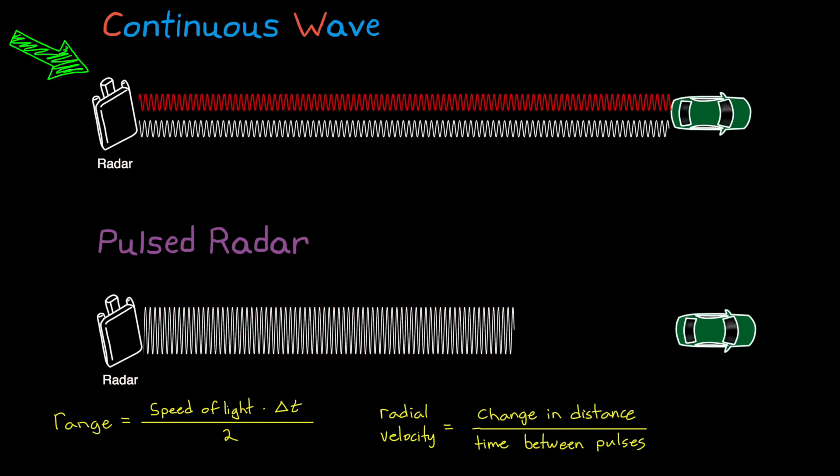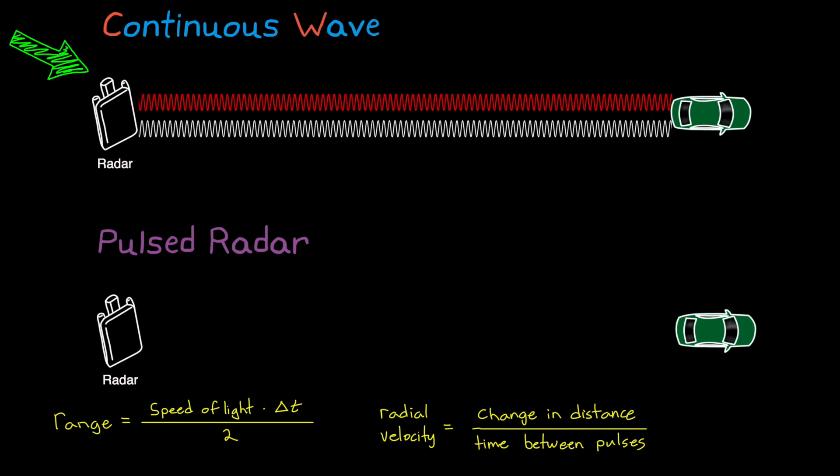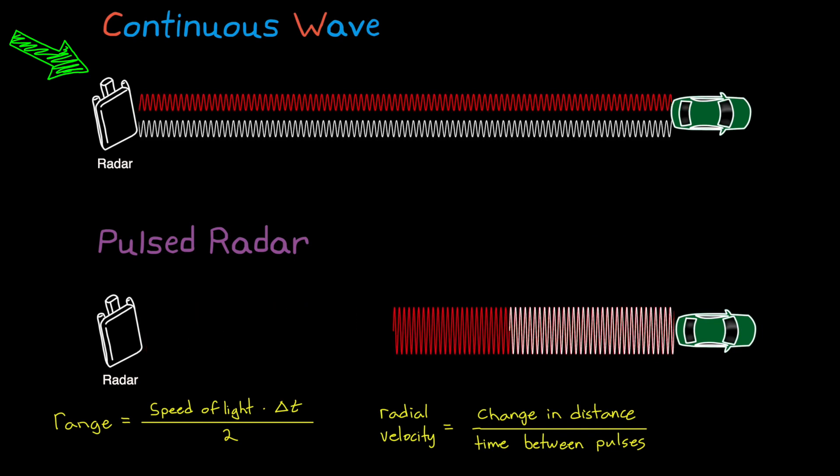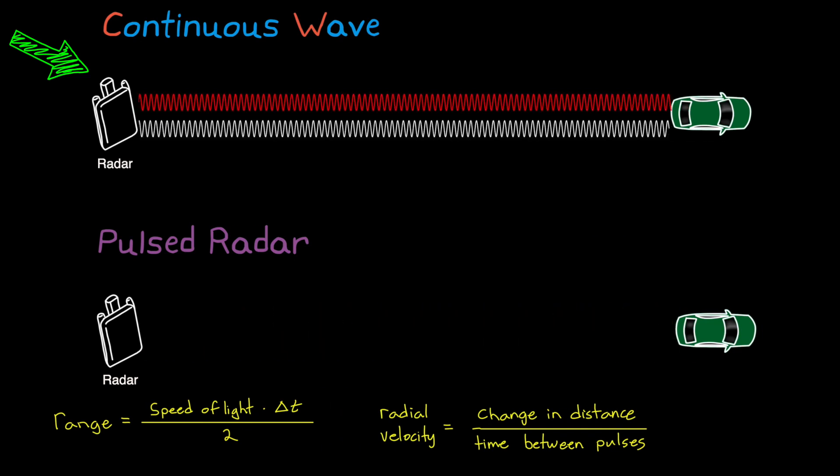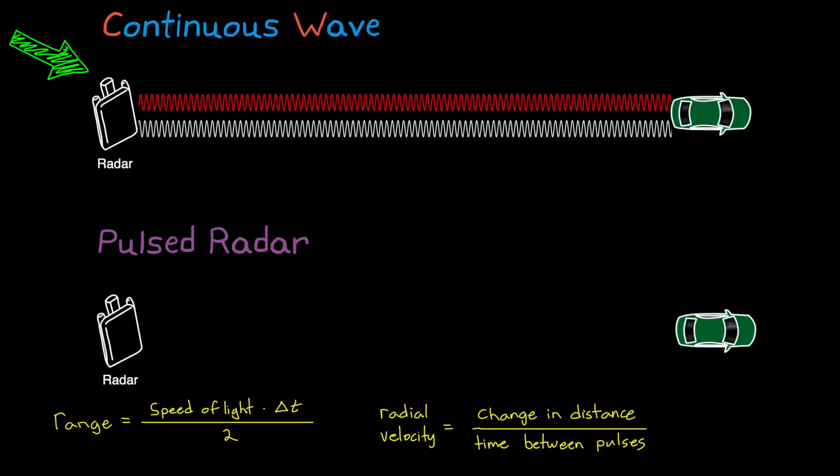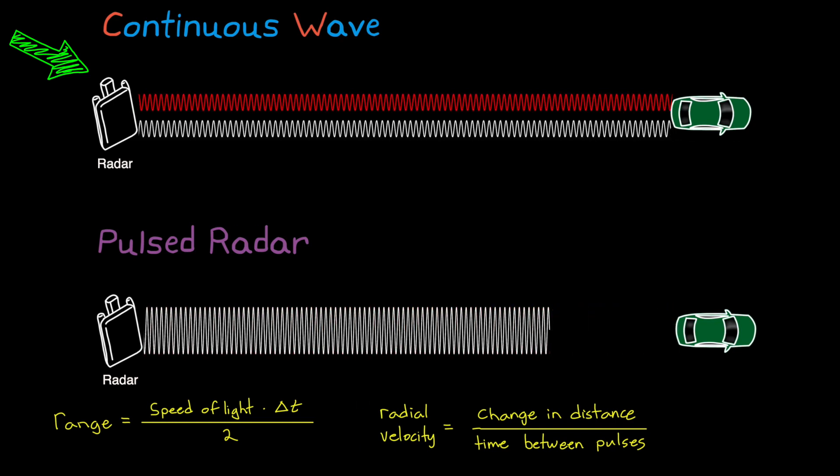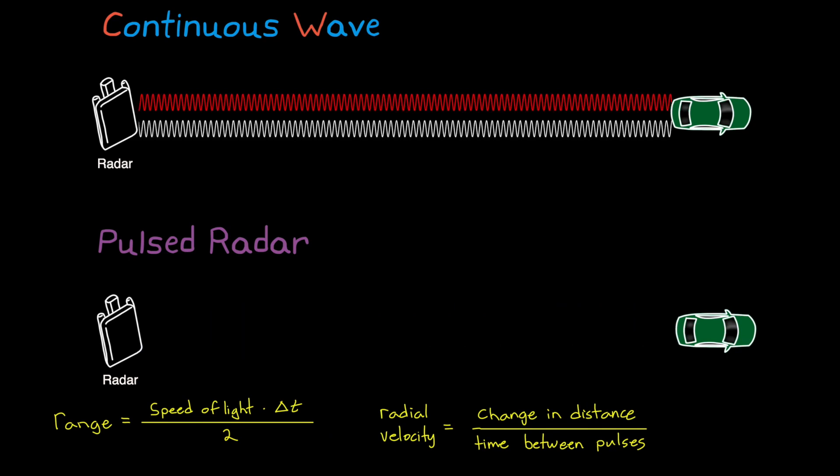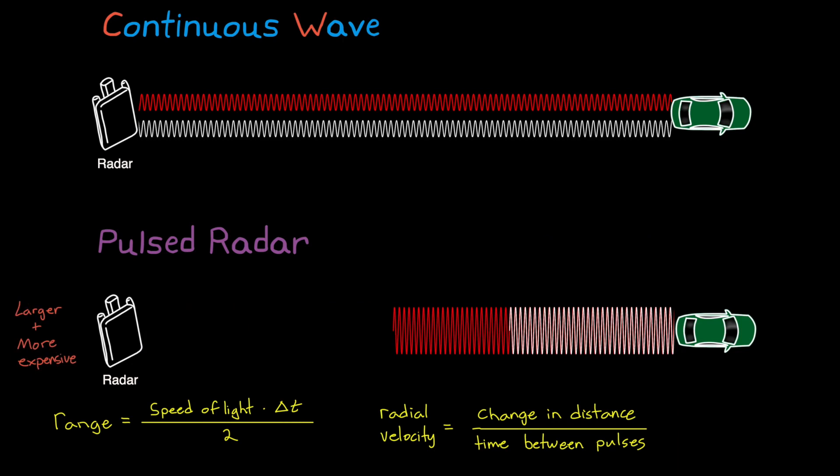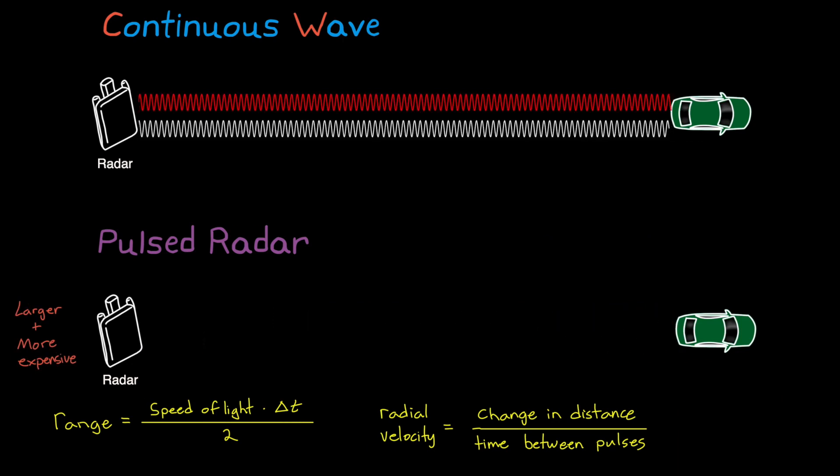On the other hand, getting these measurements isn't necessarily obvious with continuous wave radar, since there is no start and end to a continuous signal that we can use to time how long it takes for the signal to travel the round trip distance. So why are we complicating matters by using continuous wave radar? It comes down to size, weight, and power of the electronics.